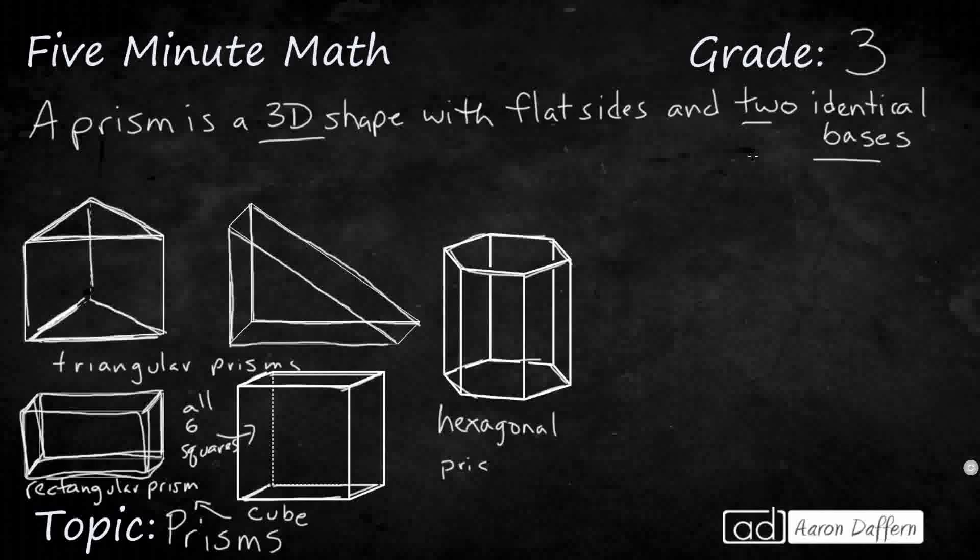Because what we have here, we have two hexagons, remember, two identical bases. So I've got my hexagon on top, I've got my hexagon on the bottom, those are my identical bases, and they are connected by flat rectangles. It's not curved. It has flat sides or flat faces connecting the two hexagons. You can have an octagonal prism. Any type of shape you can think of, you can put up there, as long as the two bases are identical.